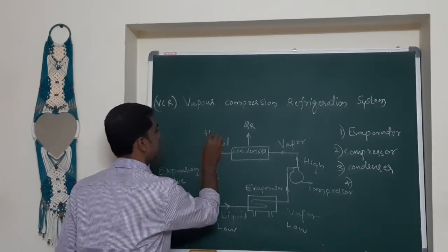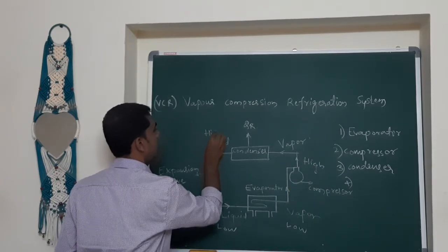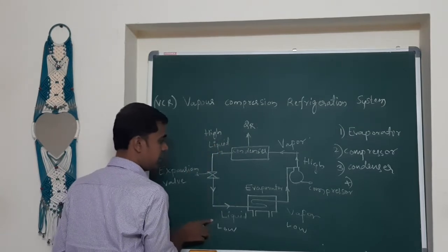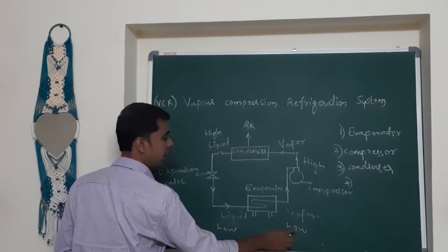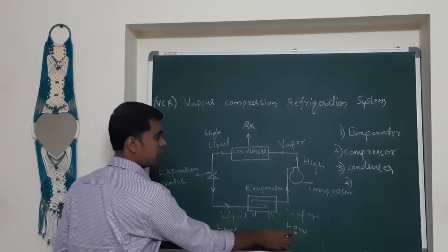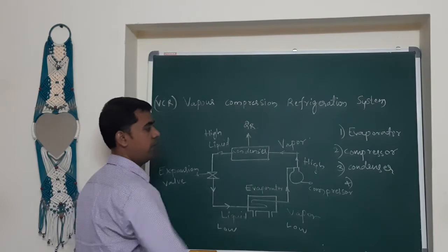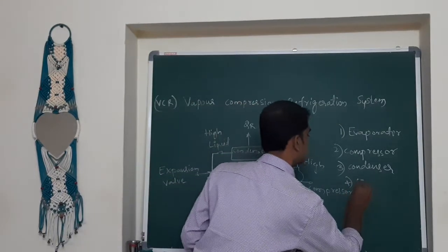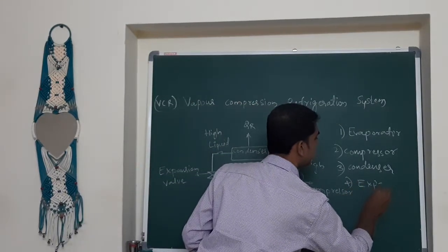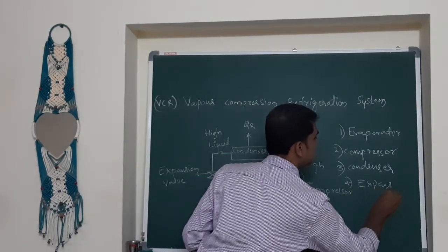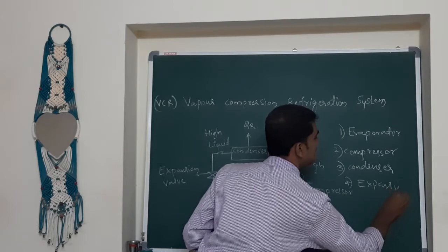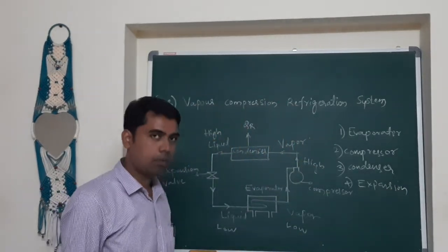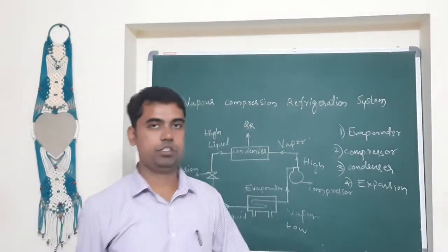To summarize the pressure states in the cycle: low pressure liquid enters the evaporator, which produces low pressure vapor, and after compression we get high pressure vapor. These are the four parts of the vapor compression refrigeration cycle.